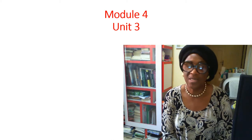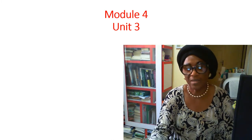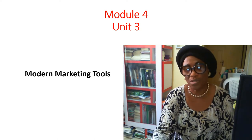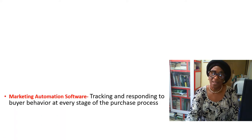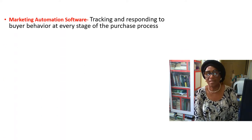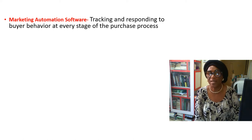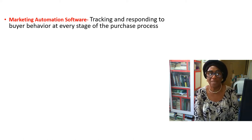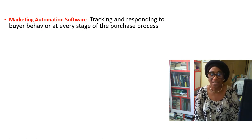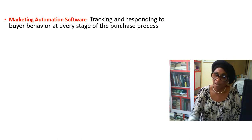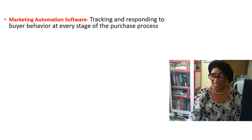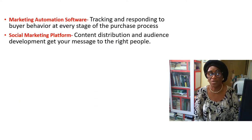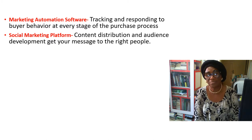You need to look at the modern marketing tools and there are quite many. The marketing automation software tracks and responds to buyer behavior at every stage of the purchase process. It is almost like research in electronic form — they install a device in order to track their audience. Then you have social marketing platforms.